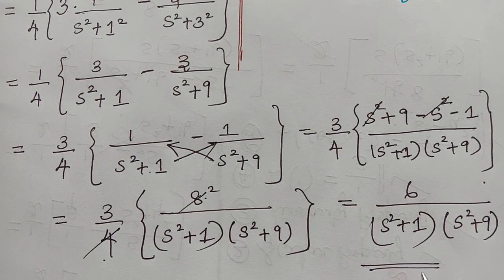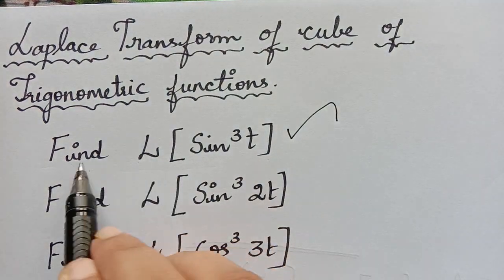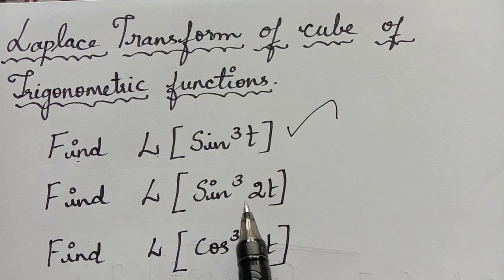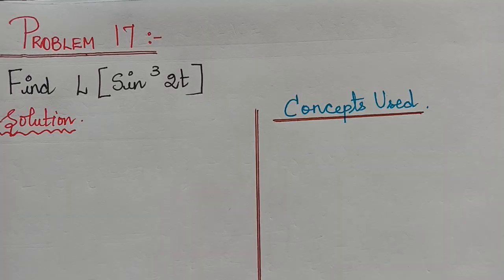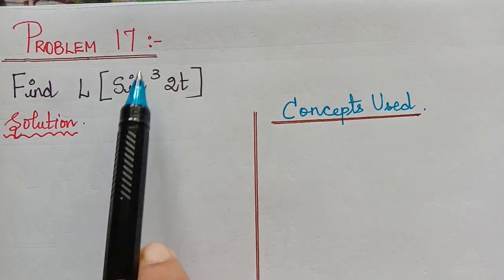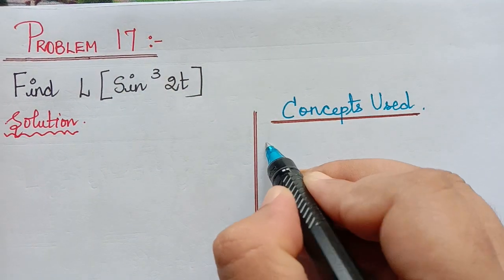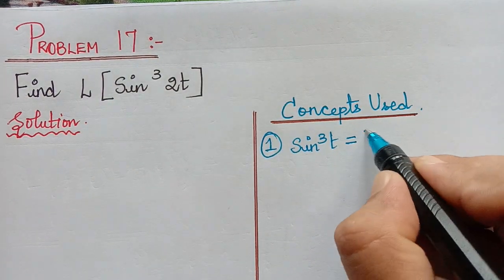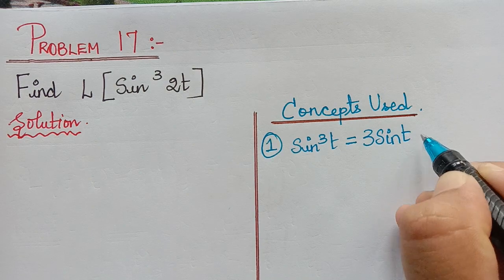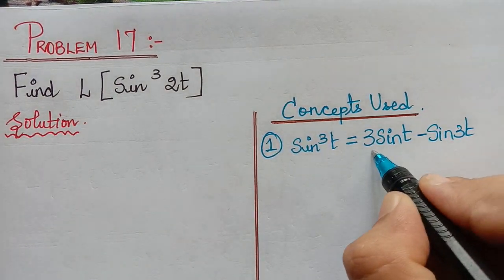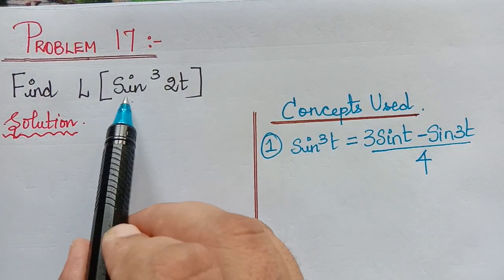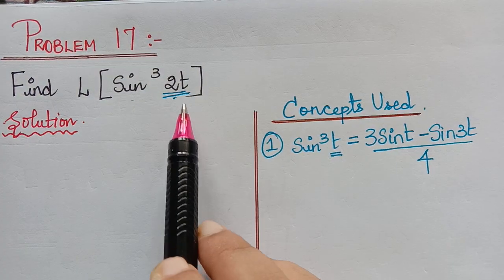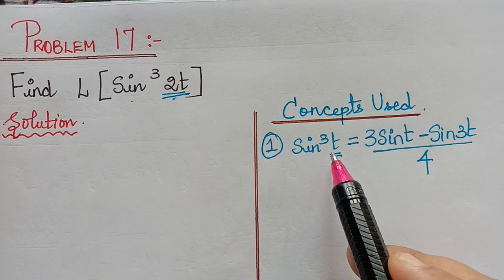We have now found the Laplace transform of sin³t. The next problem is to find the Laplace transform of sin³2t. Starting with the formula sin³t = (3 sin t − sin 3t) / 4, we need sin³2t, so instead of t we have 2t. At every place where t appears in the formula, we replace it by 2t.